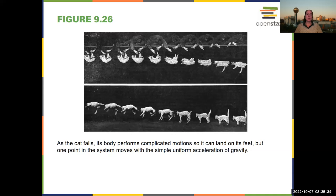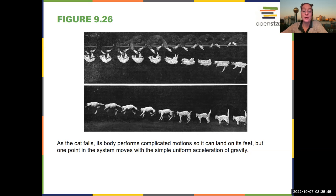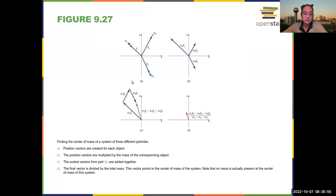Here you can see a cat falling and landing on its feet. The cat is rotating about its center of mass — what's actually falling is the center of mass — while the cat purposefully twists its legs around.